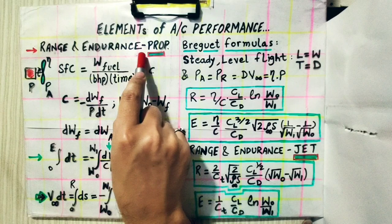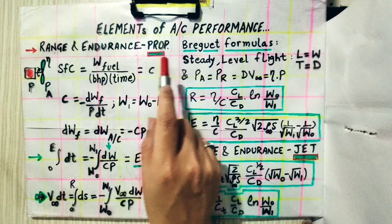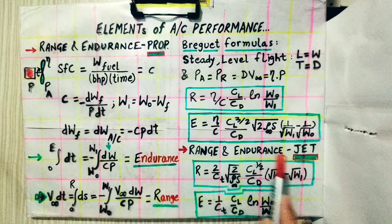In a propeller engine we talk about the power produced per unit fuel consumption, but in a jet engine we talk about the fuel consumed to generate unit thrust per unit time. The definition of specific fuel consumption remains the same — only the power parameter is replaced with a thrust parameter for the jet airplane.